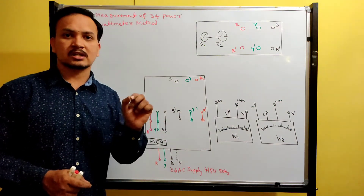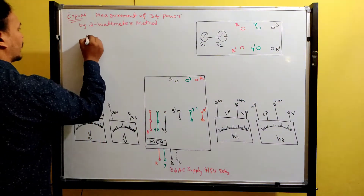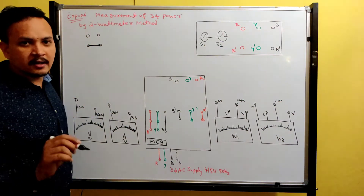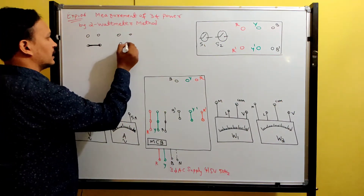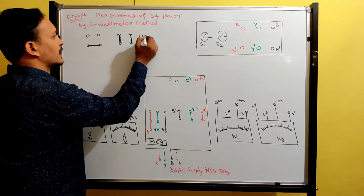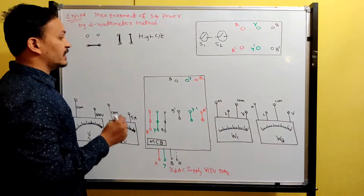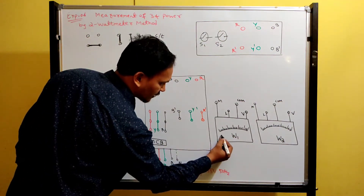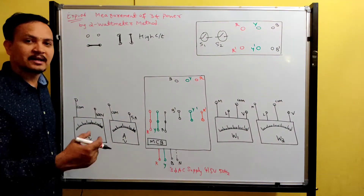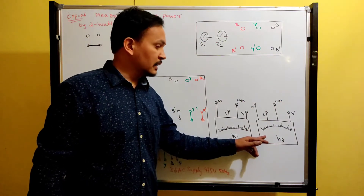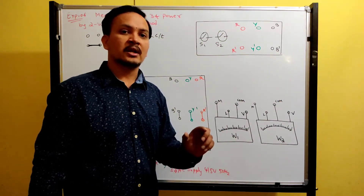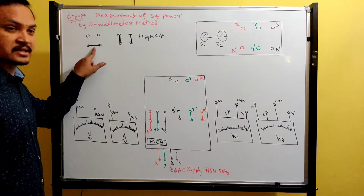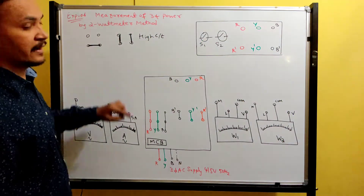At the back end of the wattmeter, there will be current coil strips. If the metallic strips are connected horizontally, that is low current range. If the metallic strips are connected vertically, that is high current range.